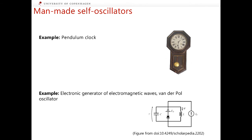Self-oscillators can be of any origin. For example, they can be made by humans. One example is the familiar pendulum clock, and another is an electronic circuit generating electromagnetic waves, named after Balthazar van der Pol.